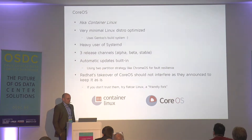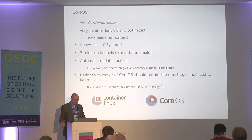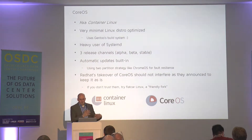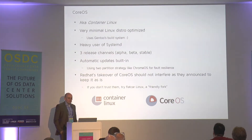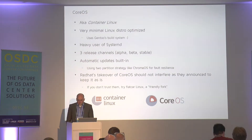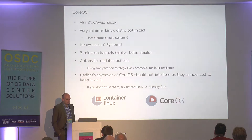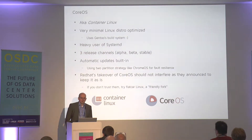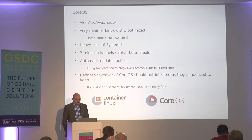The update mechanism is fault resilient — they use a dual-partition strategy popularized by ChromeOS, where you install to one partition and if something goes wrong on reboot, you just boot the old partition and try again. Red Hat recently took over CoreOS and announced they want to keep it as it is. They also had a similar OS called Atomic — unclear how they'll proceed with that. If you don't trust them, there is also a friendly fork called Flatcar, initiated by some German developers.